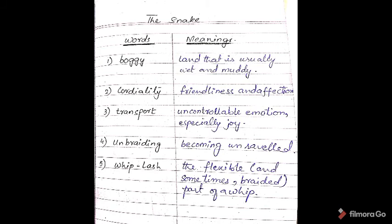The first word is 'boggy.' Boggy means land that is usually wet and muddy — that is the wet, marshy land. Second is 'cordiality,' which means friendliness and affection — friendship or love. Third is 'transport,' meaning uncontrollable emotion, especially joy — an emotion you cannot control.